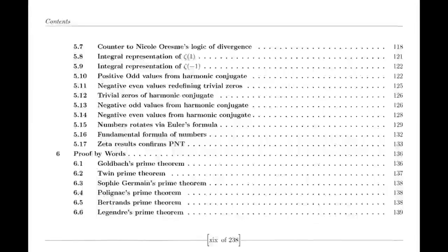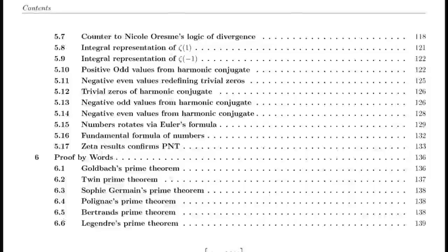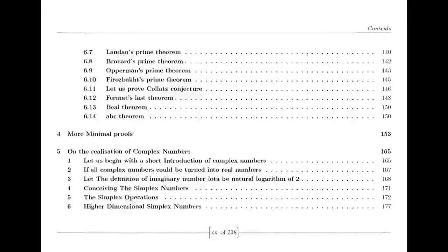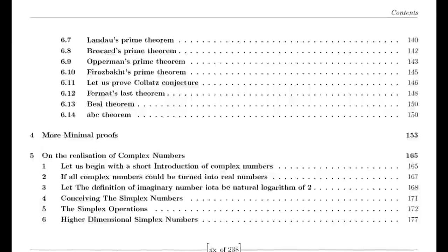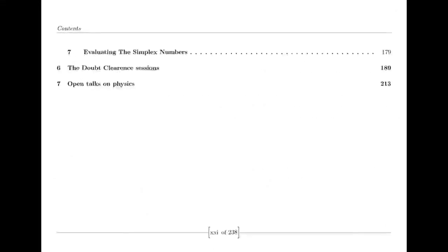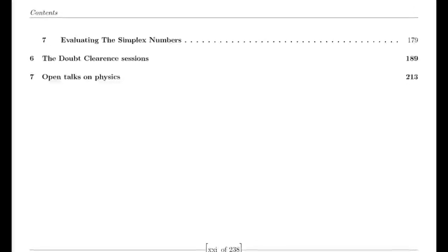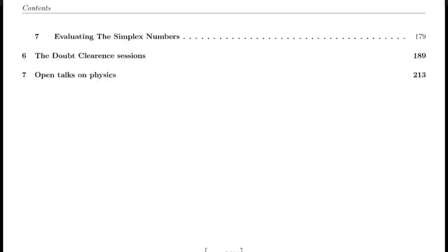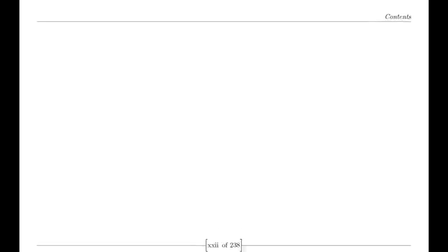Dirichlet Eta Function. Riemann was also influenced by the Dirichlet eta function, defined by an alternating series. This function is closely related to the zeta function and provides valuable insights into its behavior, particularly for values of s less than 1. The relationship between the eta function and the zeta function is encapsulated in a simple formula involving the gamma function and powers of 2, helping to understand the zeta function's properties across different regions.